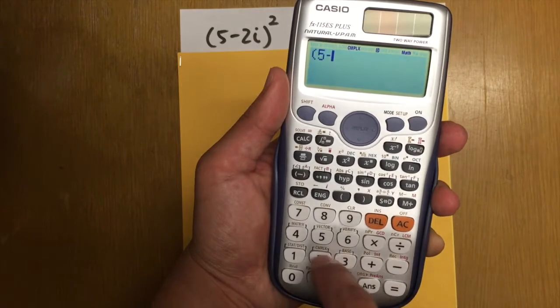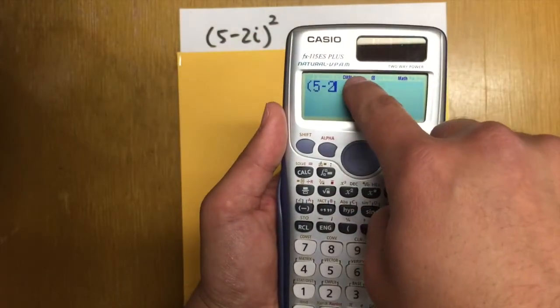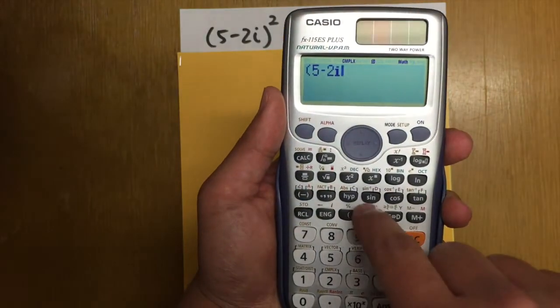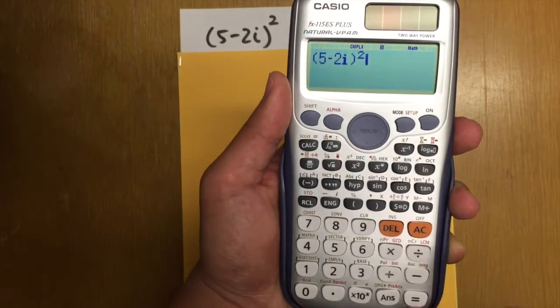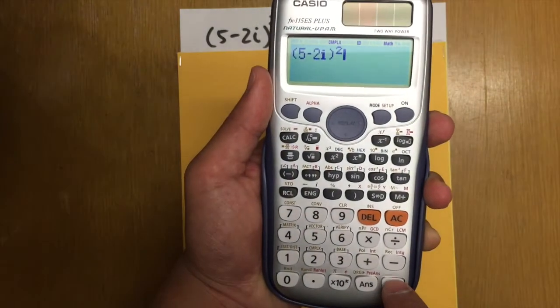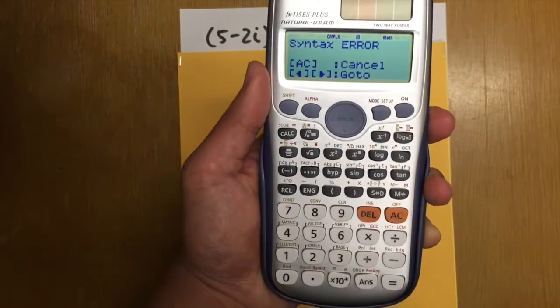If you press negative here and then 2. And this is the i button here. And because we're in the complex mode already, you can just press this. And then it pops out the i for you. And then close parentheses. And then square. But then because I use the negative for this right here. This is going to give us syntax error. That means we enter something incorrectly.